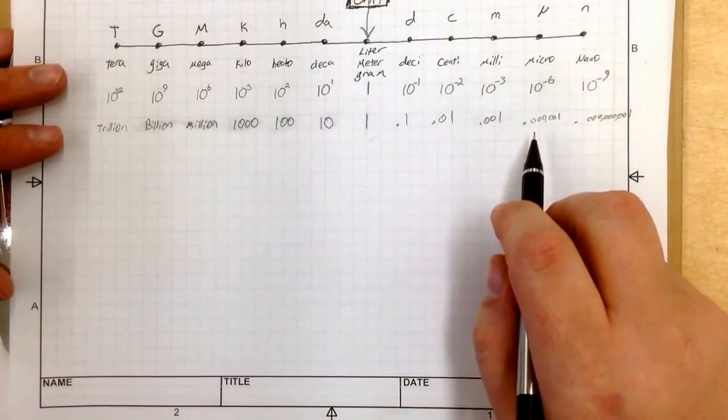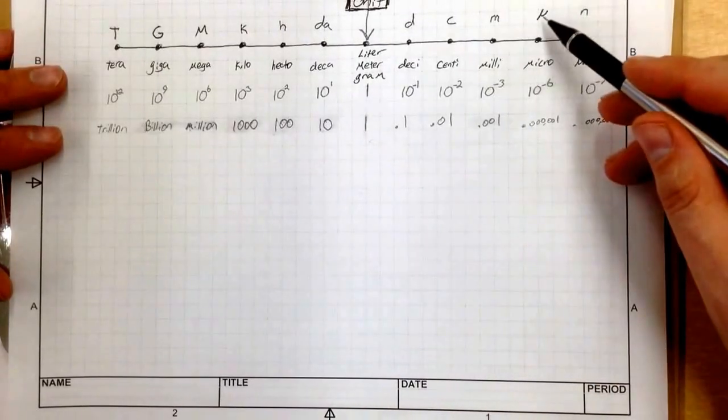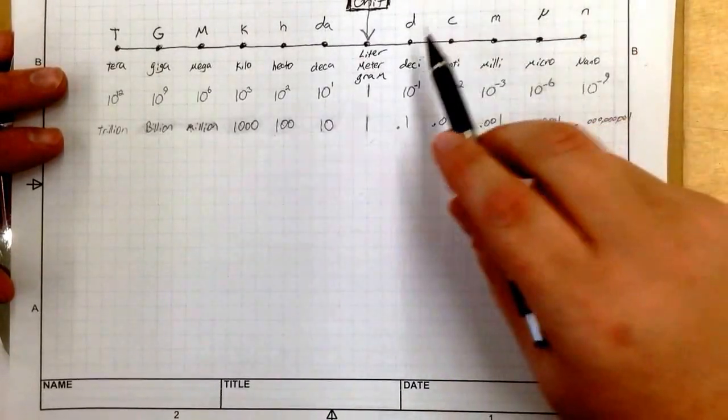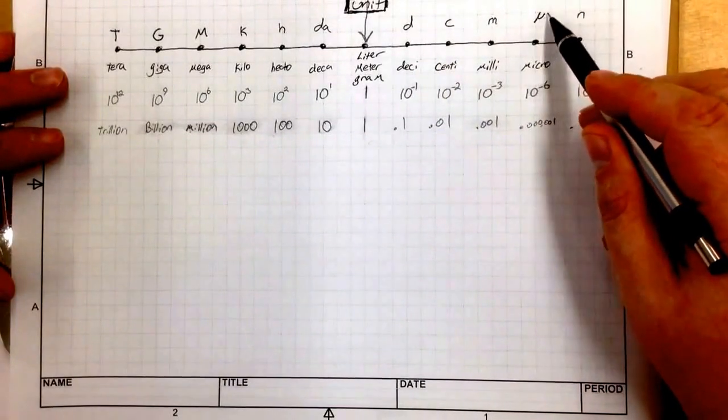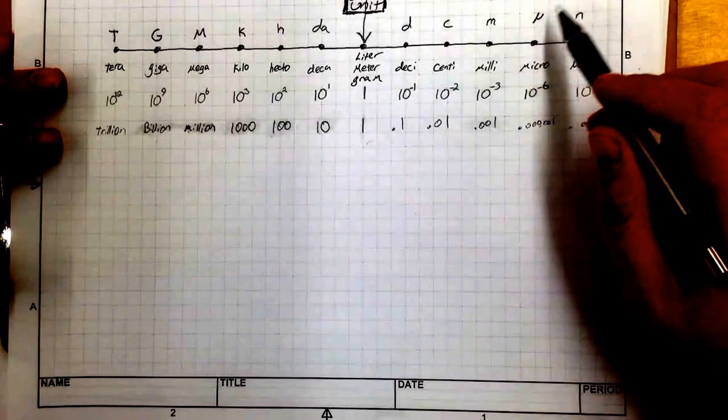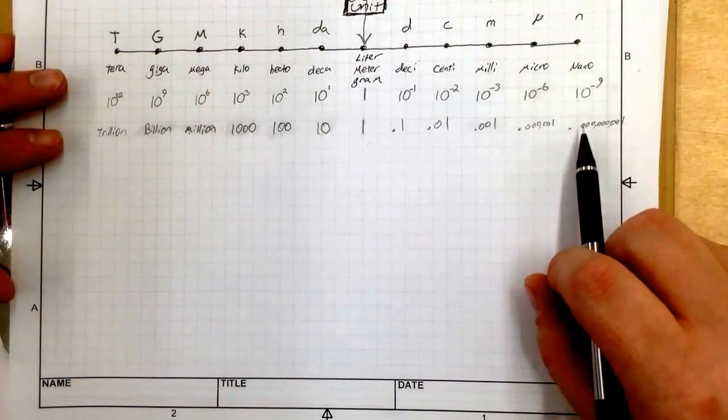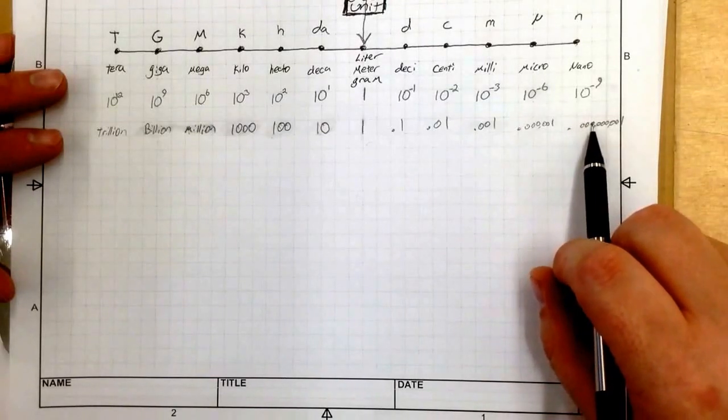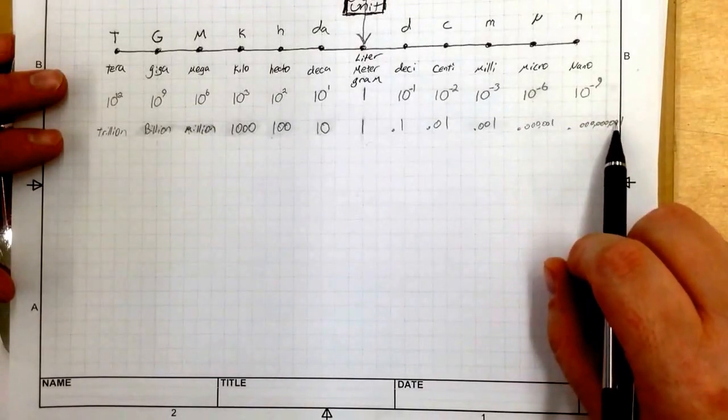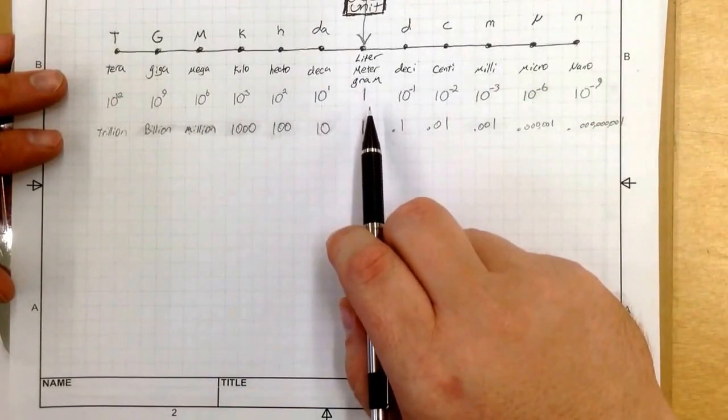Micrometer, which is 0.000001. Now you may notice this symbol. Most everything else is a letter. This is the symbol mu. So just so you know, it looks sort of like a cursive M and a Y. Then also you have a nanometer, which is 0.0000001 length of a meter.